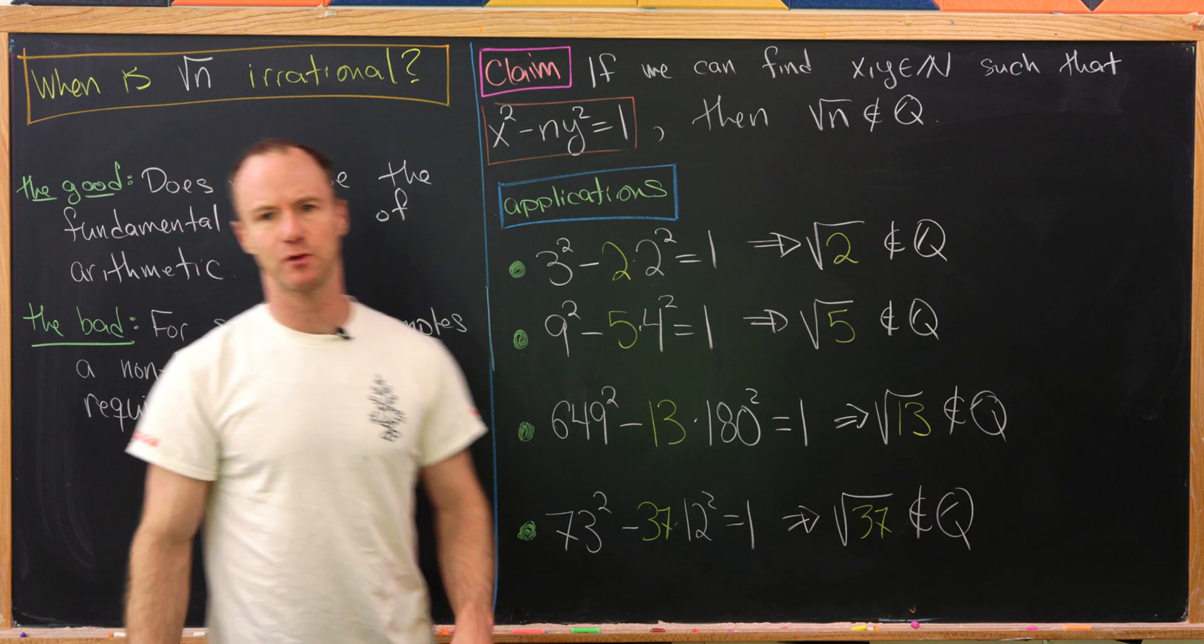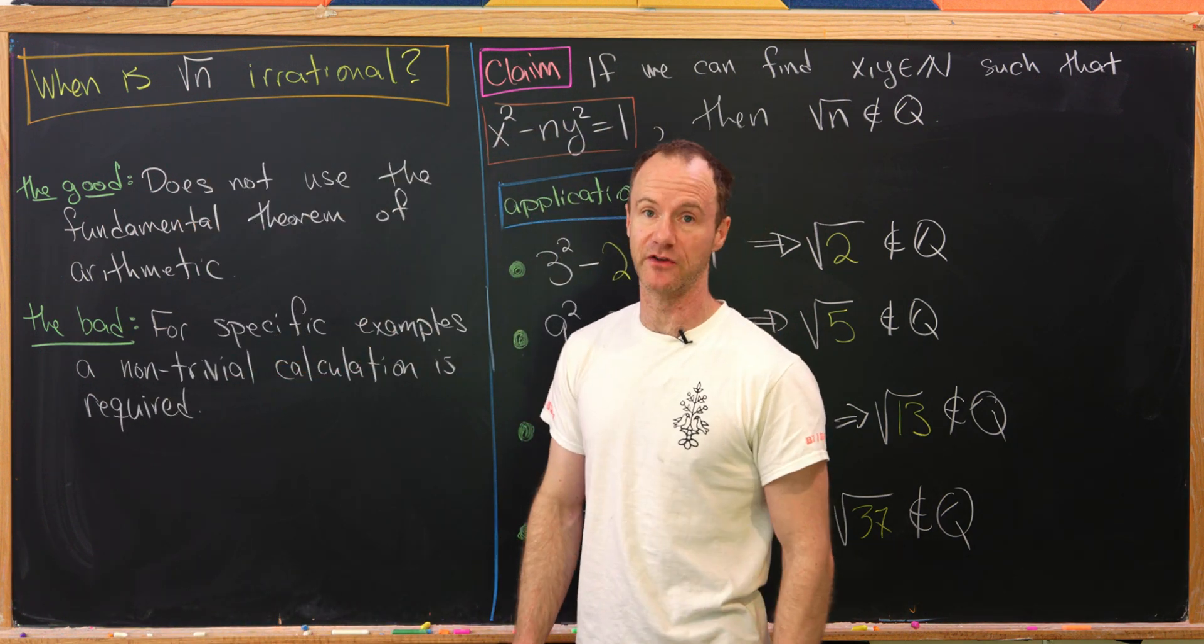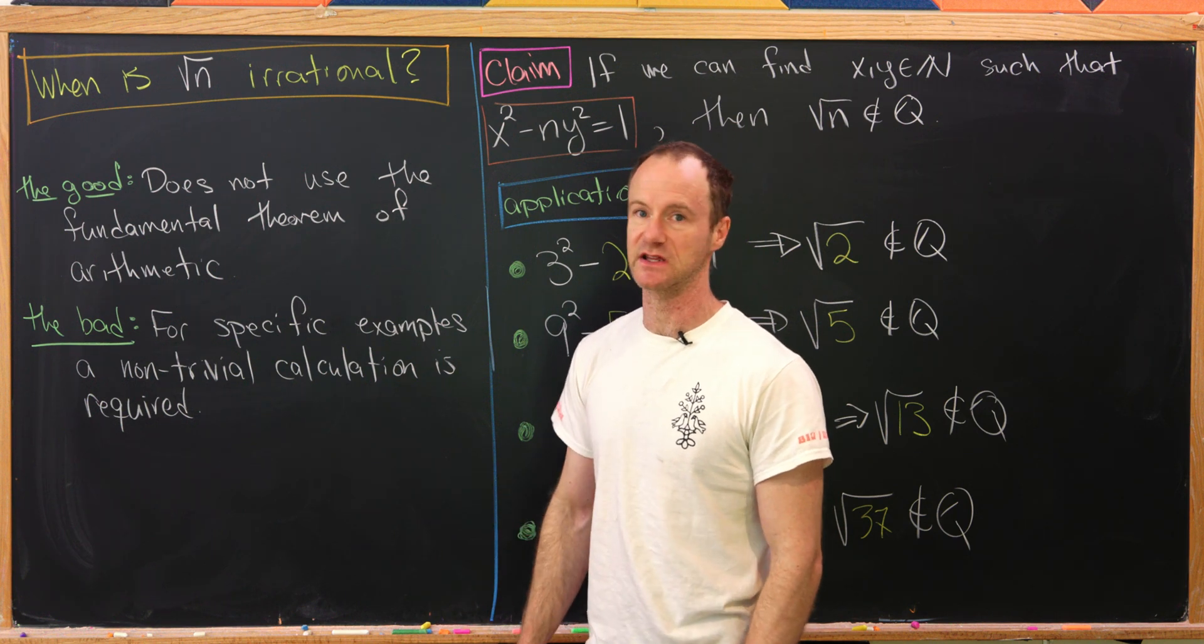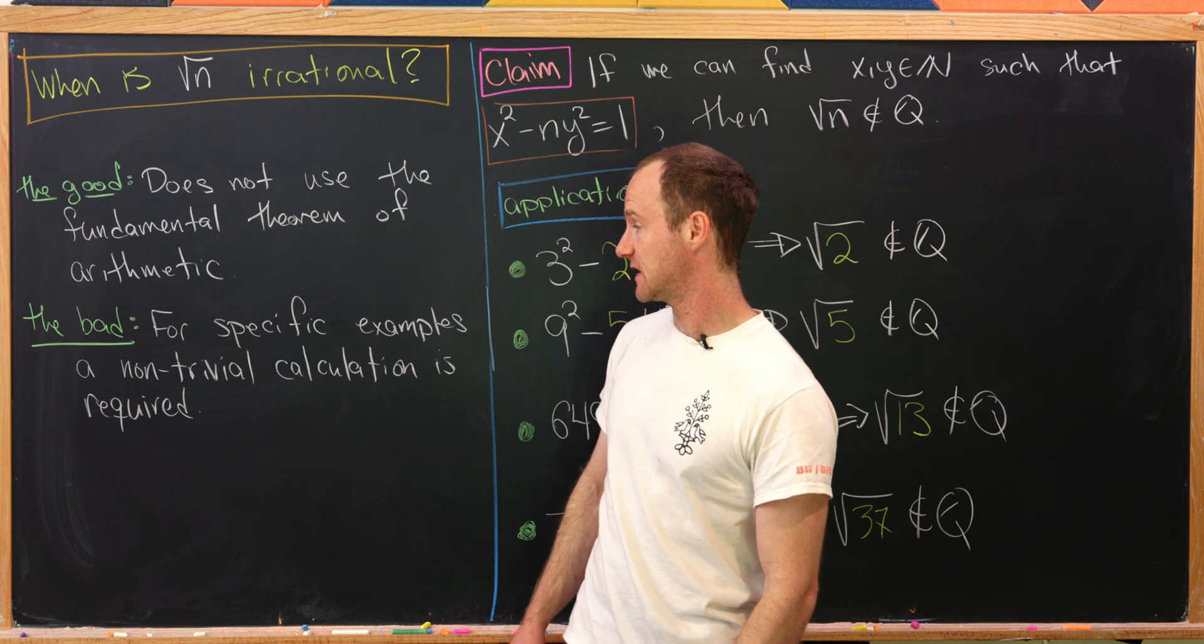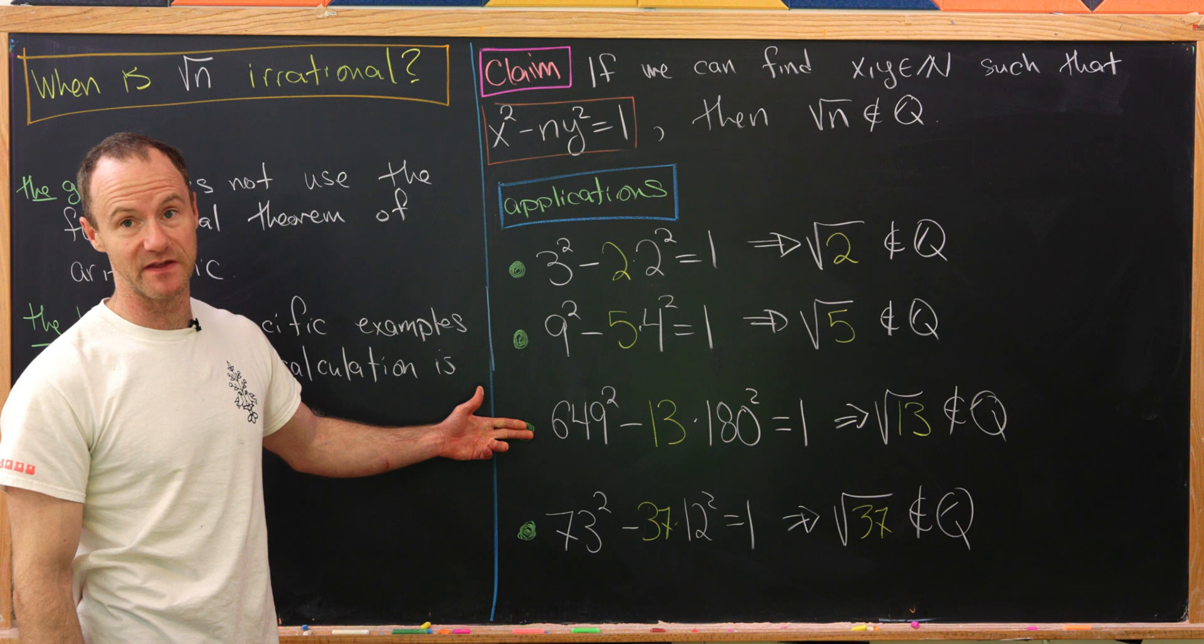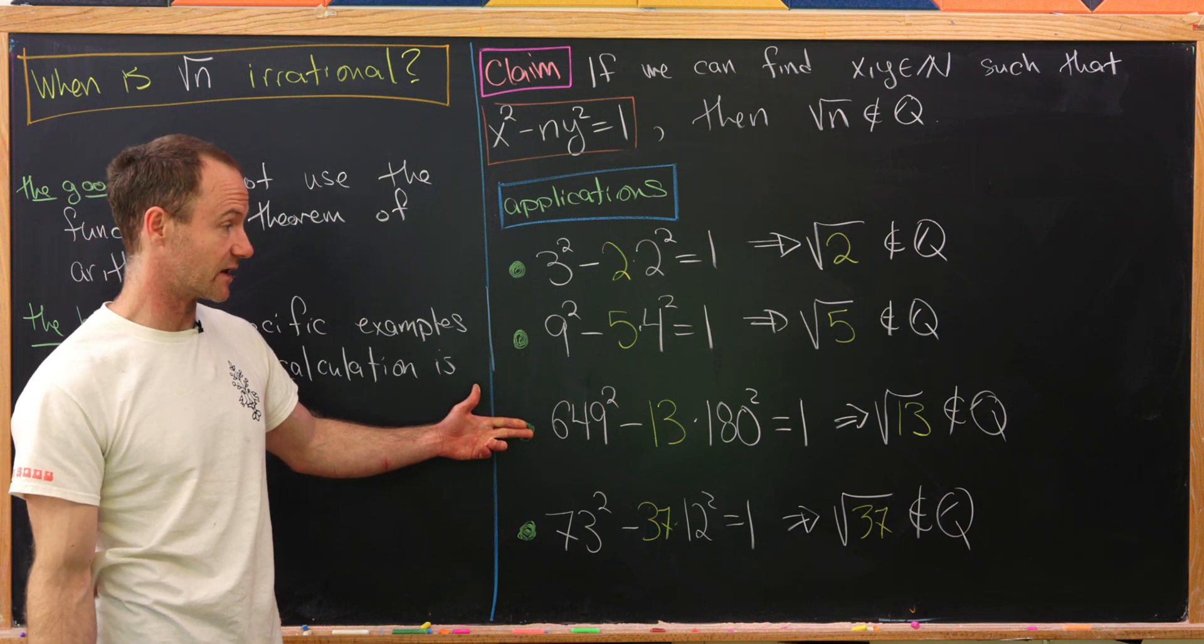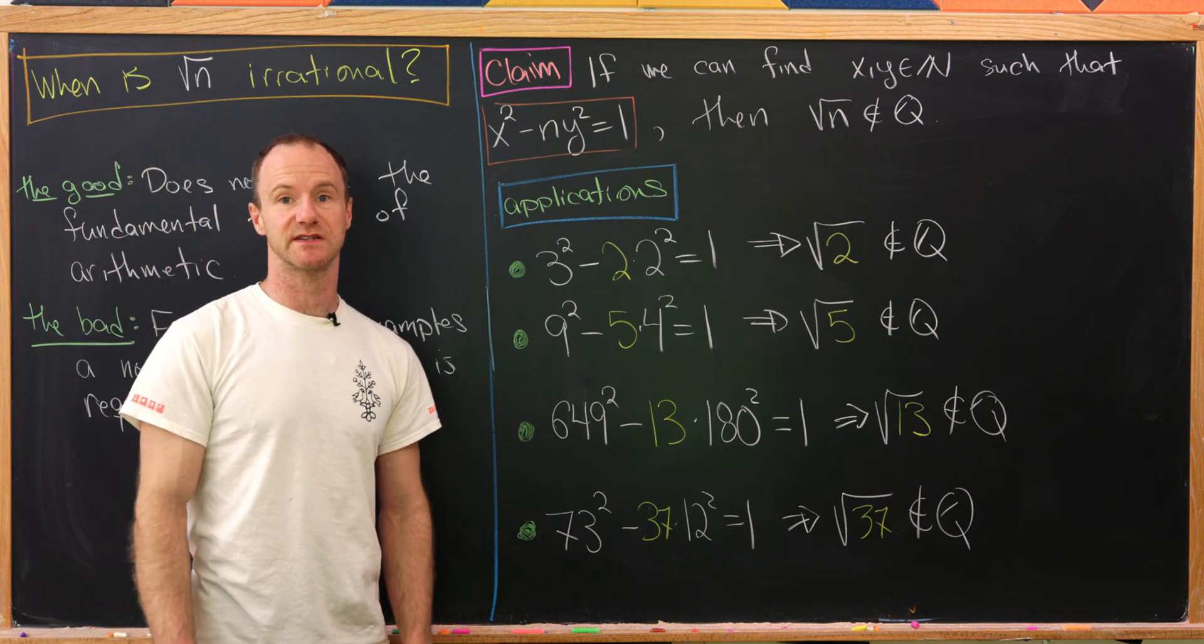Let's get back to what we said. We did not use the fundamental theorem of arithmetic in our proof, either explicitly or implicitly. But as I said, for specific examples, there's a non-trivial calculation. That's highlighted by this right here. Of course, I did it in a computer. I think it would be pretty difficult to do it by hand. And that's a good place to stop.